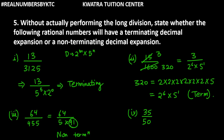The last one is 35 over 50. We can reduce this very simply to get 7 over 10. We know 10 can be written as 2 into 5. Therefore, the number is terminating, because it has 2 and 5 in the denominator.